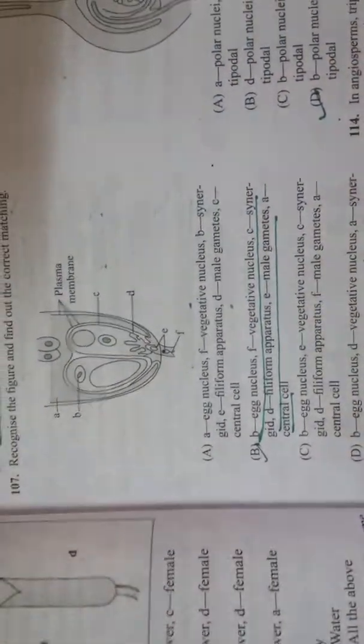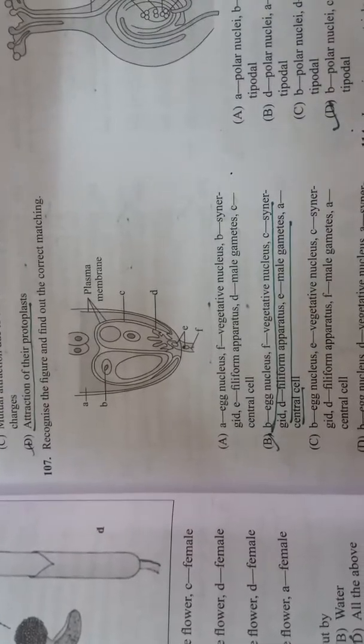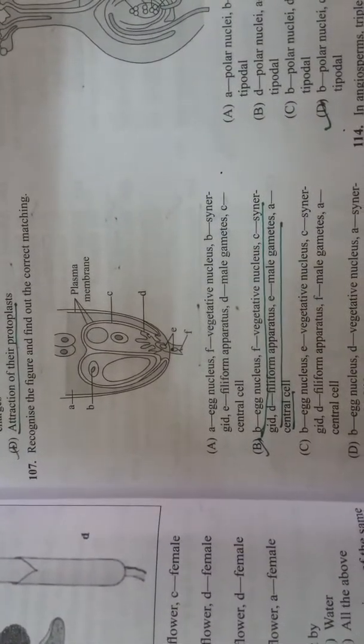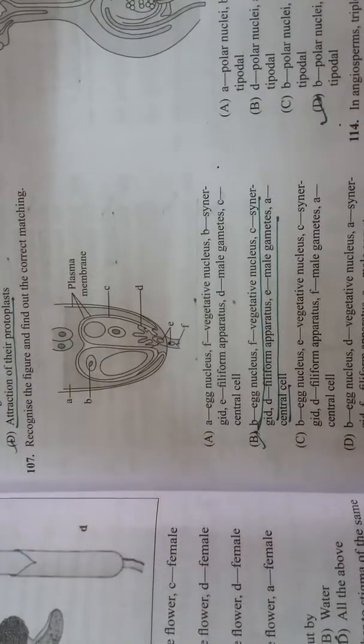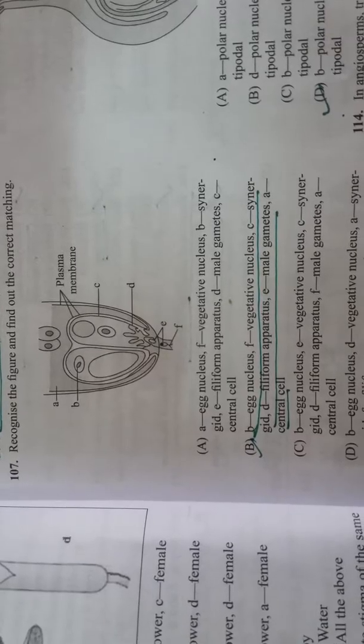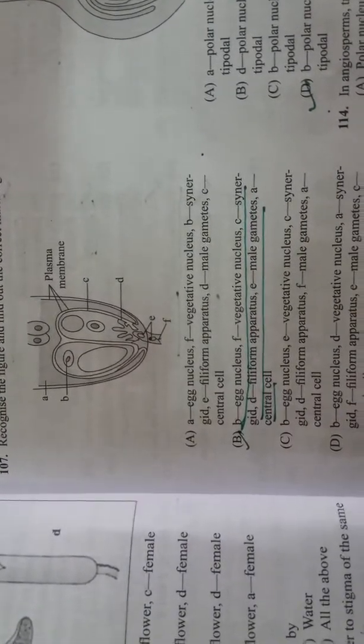When you have your study, make it small and small and make the facts. B is egg nucleus, F is vegetative nucleus, C is synergid, D is filiform apparatus, E is male gametes, and A is central cell.